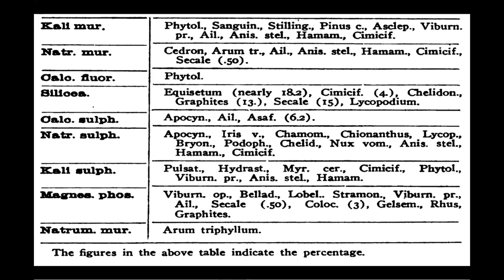Mag Phos is present in Viburnum Opulus, Belladonna, Lobelia Inflata, Stramonium, and Viburnum Prunifolium — this plant contains a lot of salts we are not using and never consider why it works the way it does. Eleanthus, Secale Cor at 0.5–50 percent, Colocynth at three percent — Mag Phos and Colocynth have a very close relationship with very similar features; only the modalities differ. Colocynth itself carries the Mag Phos.